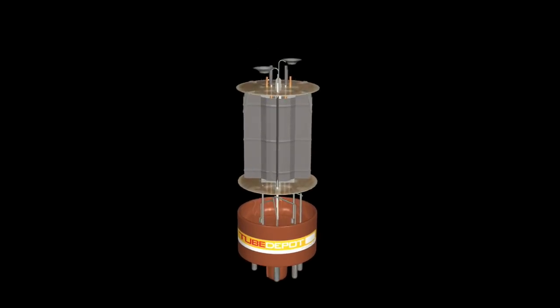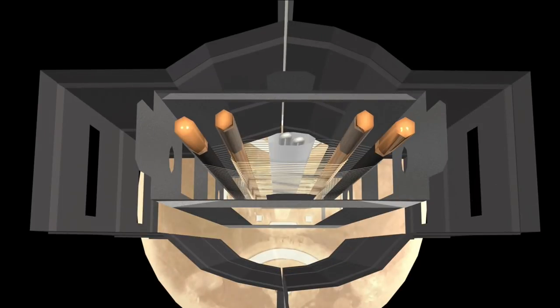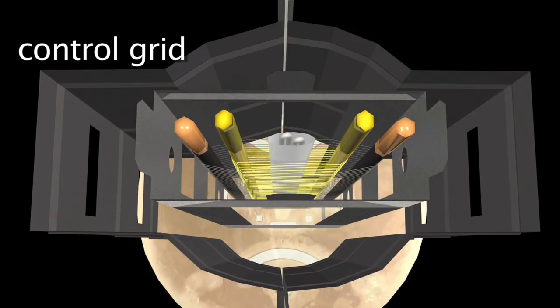Now let's talk a little bit about how a tube operates. To review, there are six elements that make up an SED 6L6GC vacuum tube. There's the anode plate, the beam-forming plate, the screen grid, the control grid, the cathode, and the filament.